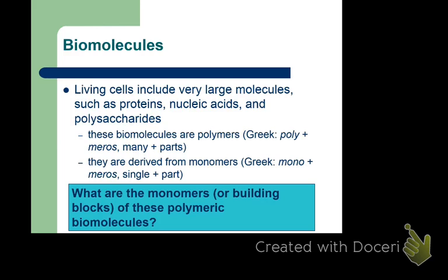Biomolecules are also called macromolecules because they're large. There are four general classes: proteins, nucleic acids, polysaccharides, and lipids. Lipids aren't listed with the others because the others are polymers with clear monomers, whereas lipids — like cholesterol versus triglycerides — come from different metabolic pathways and don't share a simple common monomer.